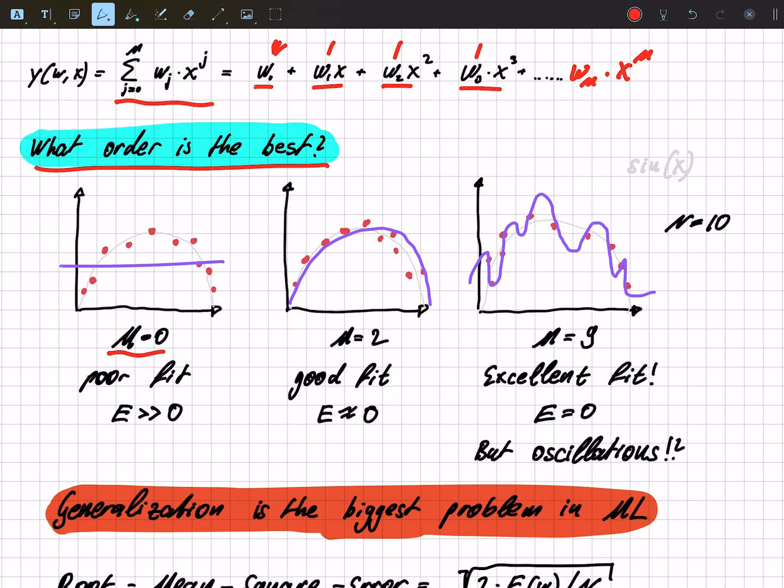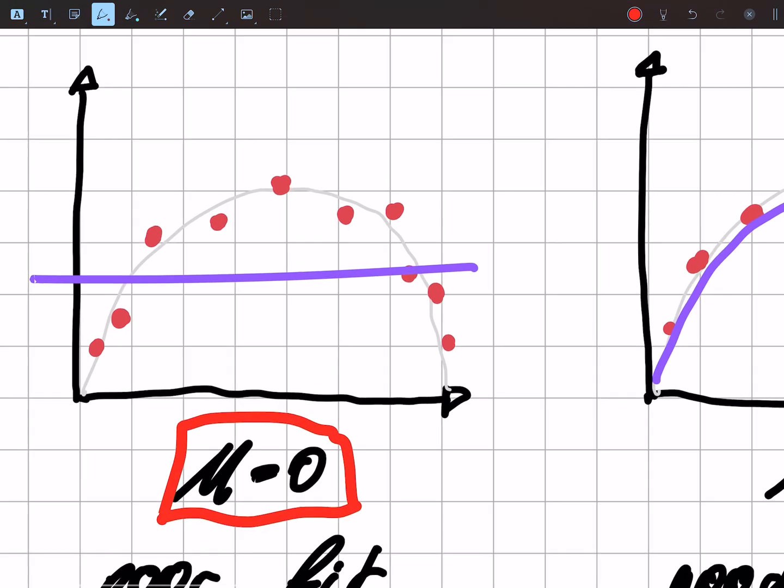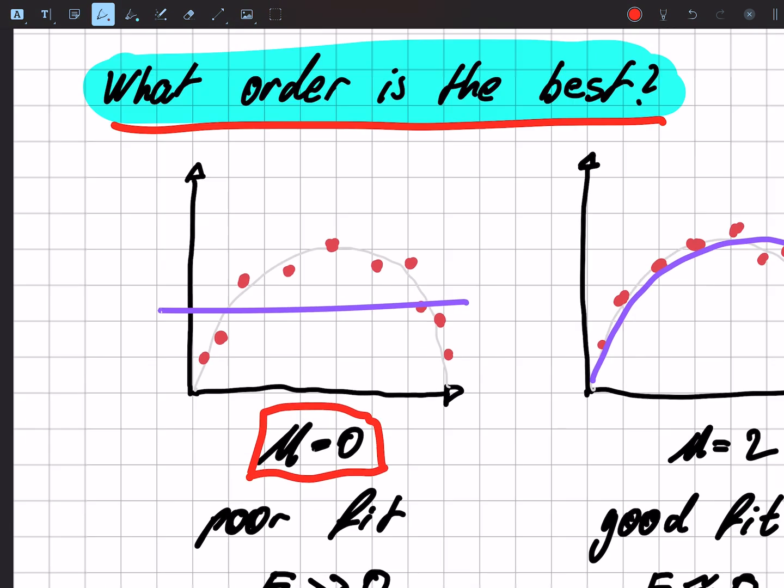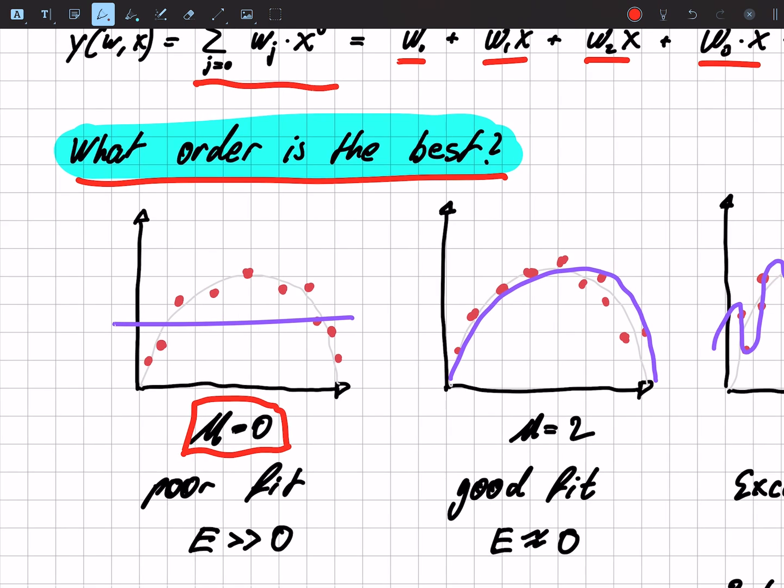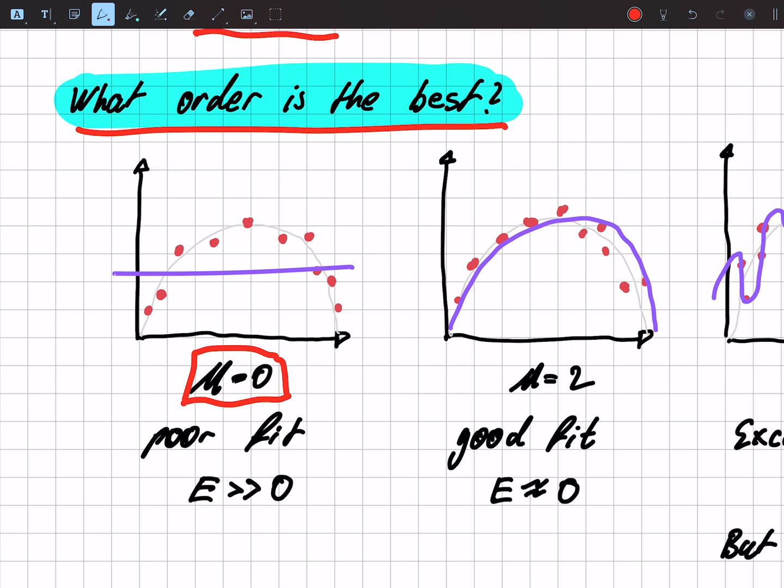Let's go through some different cases. First we start with degree zero. We have here in gray our sine curve and the data. The data has some noise. If we start with a polynomial degree zero, we have a very poor fit.